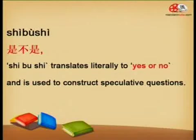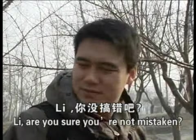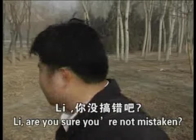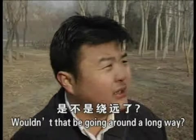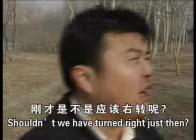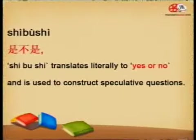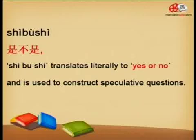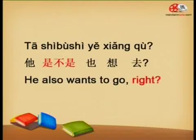The second grammar point is 是不是. 李，你没搞错吧？是不是照远了？刚才是不是应该右转呢？ 是不是 translates literally to 'yes or no,' and it's used to construct speculative questions, to indicate some speculation about something. For example: 他是不是也想去? — He also wants to go, right?